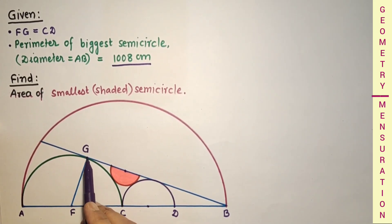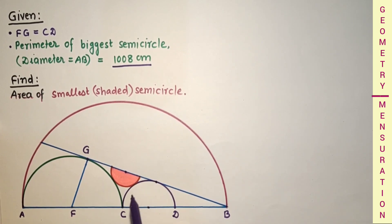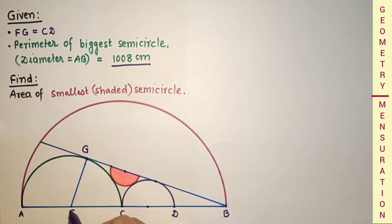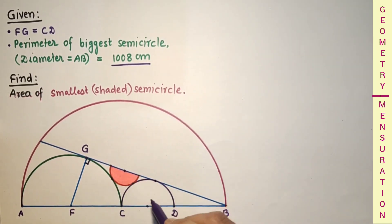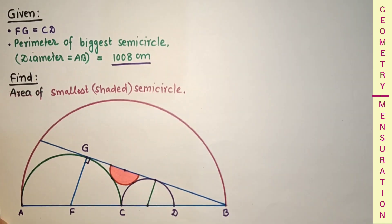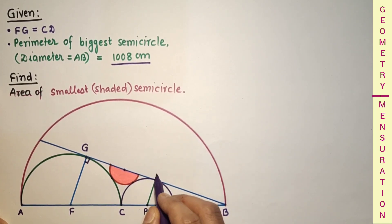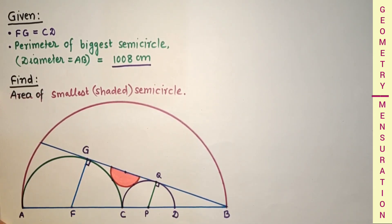This is the point of contact where this tangent line touches this circle, and this is the point of contact for this semicircle, and this is the point of contact. As radius and tangent at the point of contact will be at a right angle, if we join them it will be 90 degrees. Let us suppose this point is P and this point is Q. So FG and PQ are both perpendicular to this line, which means these two lines are parallel.